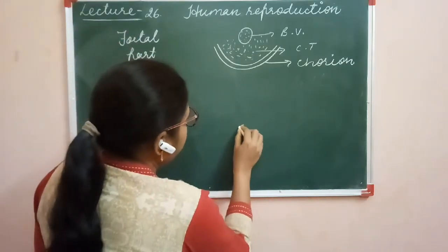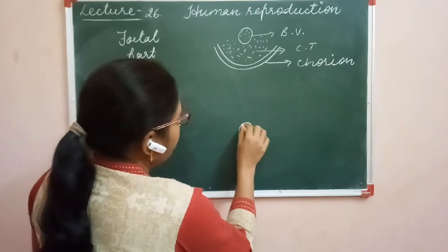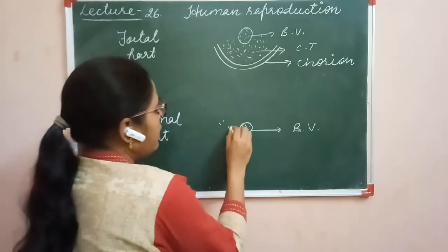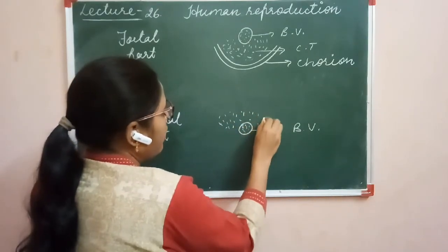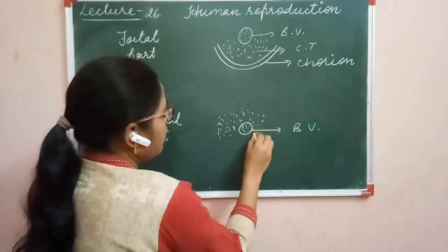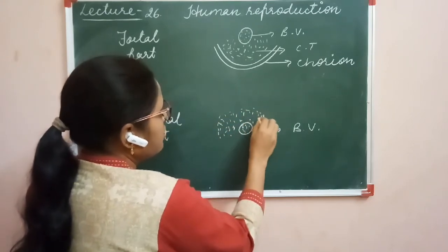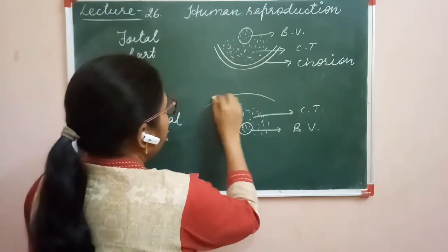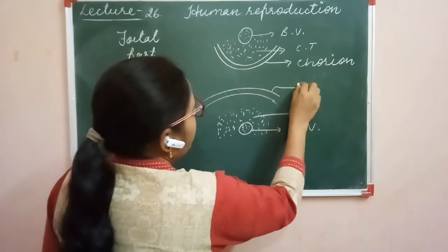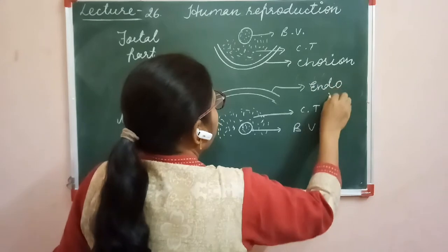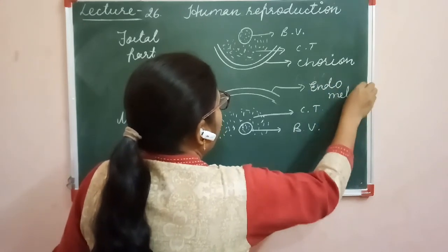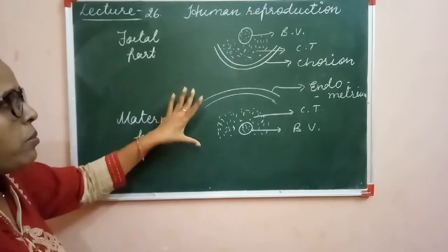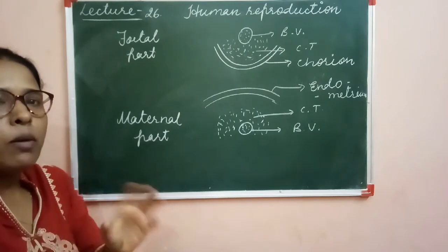Here is the blood vessel filled with blood — this is the blood vessel of the maternal part. Again it is surrounded by connective tissue. This connective tissue is present around the blood vessel of the mother, and here is the endometrium layer. So this is the maternal part of the placenta. All of these fetal and maternal parts combine to give rise to a complete placenta.